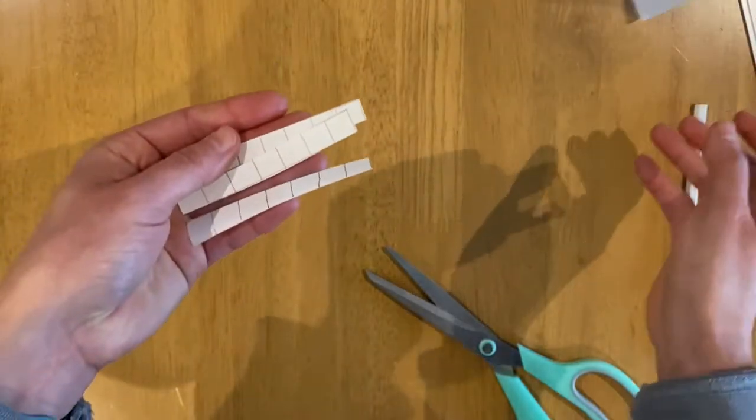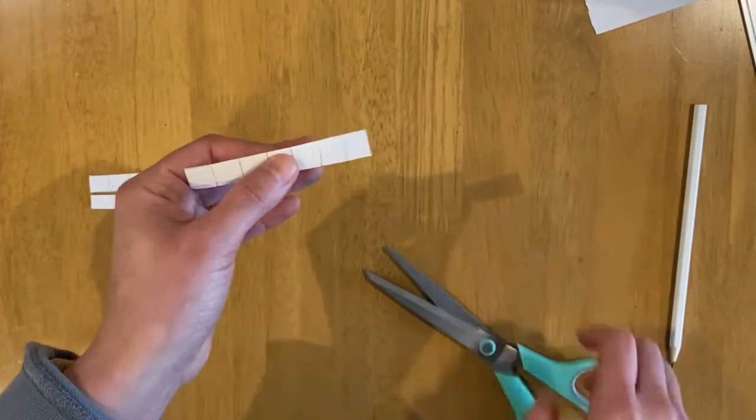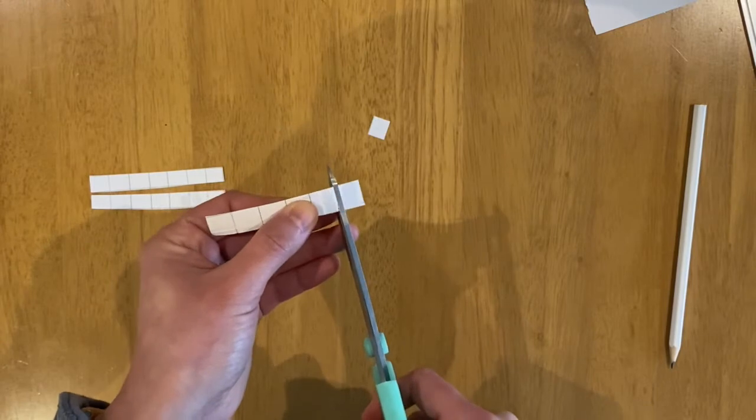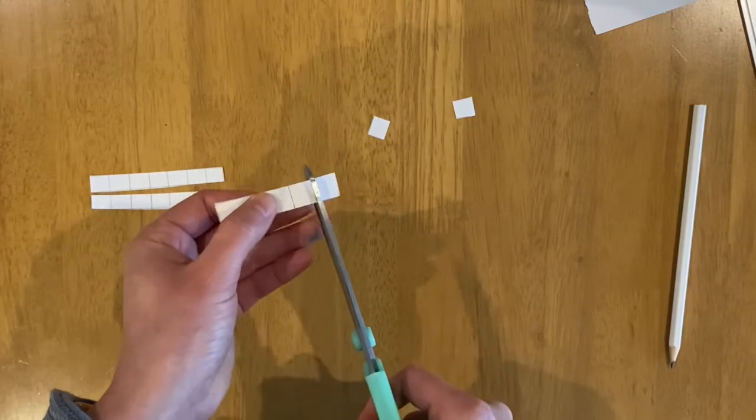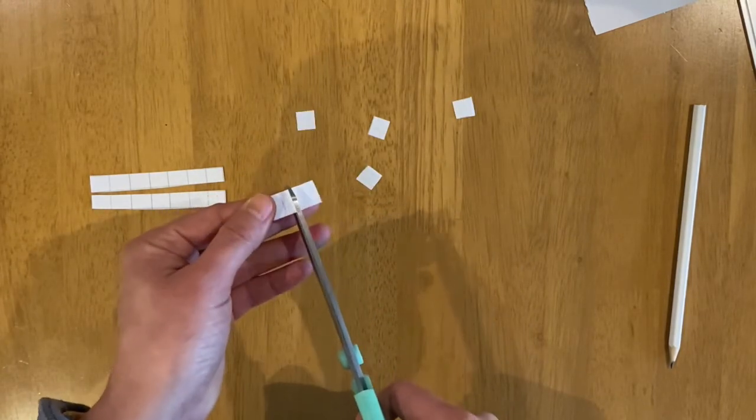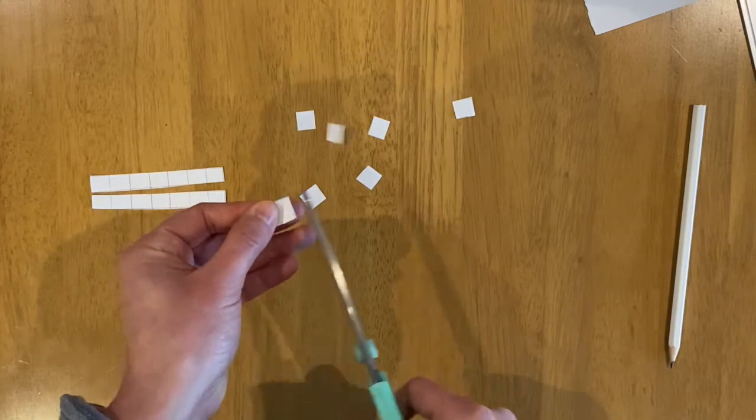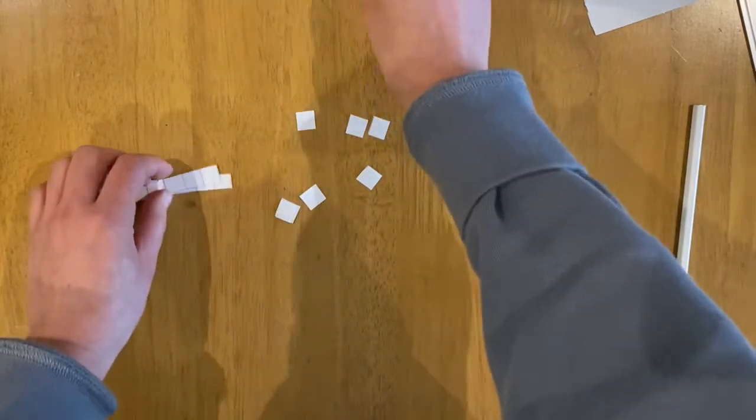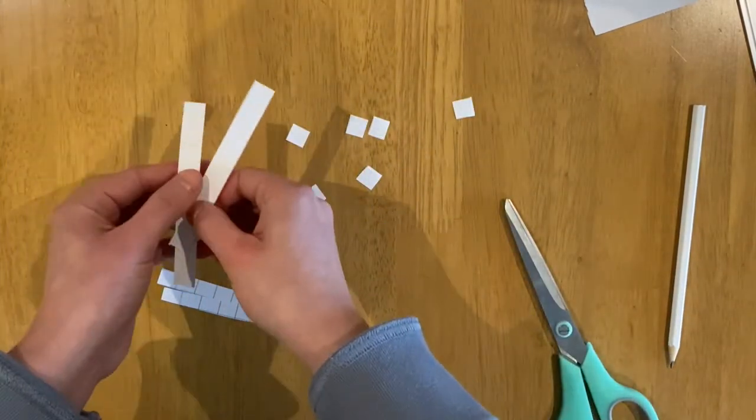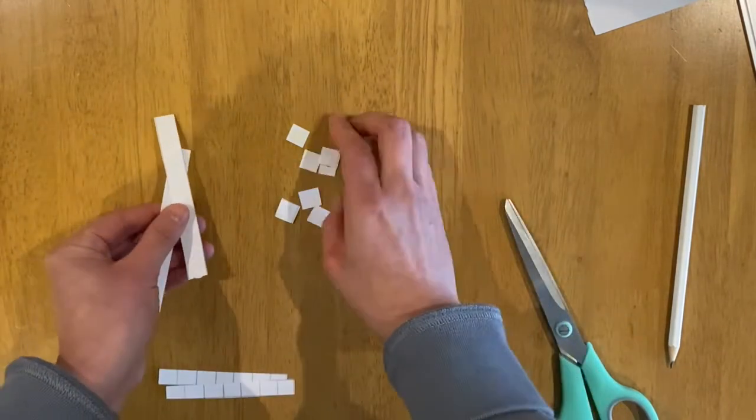Get these ones and then just need to snip the little squares. So when you've finished you will have lots of tens deans and lots of ones deans.